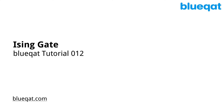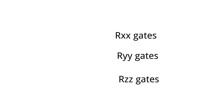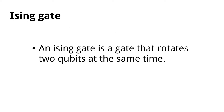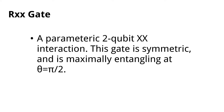In this tutorial video we will be learning about Ising gates. Here I will be talking about RXX, RYY, and RZZ gates under Ising gates. First of all, we should know what an Ising gate is — it is a gate that rotates two qubits at the same time. The RXX gate is a parametric two-qubit interaction rotation about XX. This gate is symmetric and is maximally entangling at theta equals pi over 2.